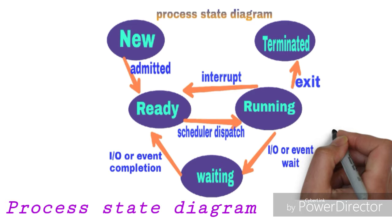From the ready state, a process changes its state to the running state. This is done by the scheduler dispatcher, also known as the short-term scheduler. The dispatcher is used to give control of the CPU to a particular process.